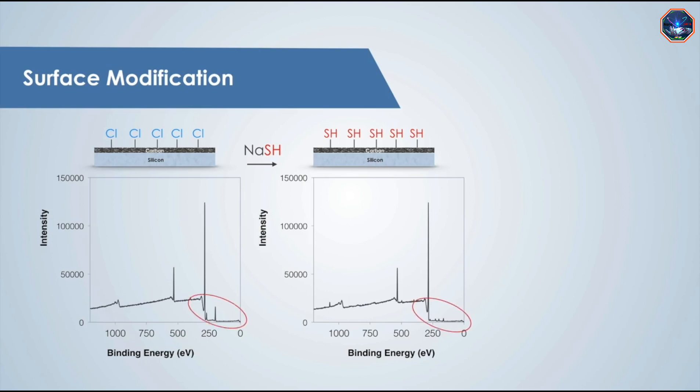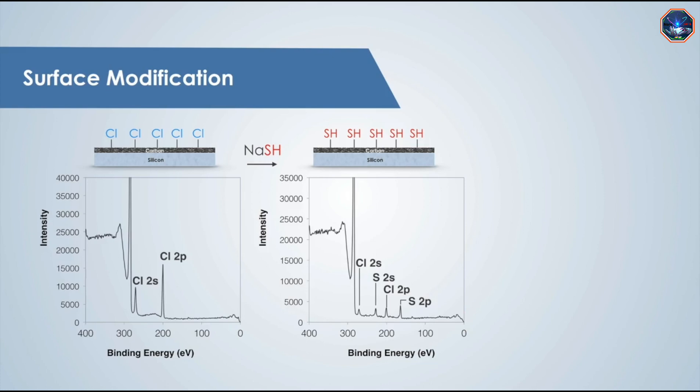And if we zoom into the lower binding energy region, we can see that the two new peaks are energies consistent with the addition of sulfur to the surface. But there are still small chlorine peaks present.